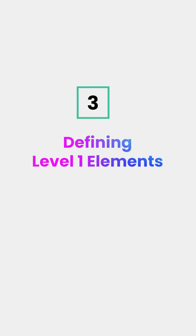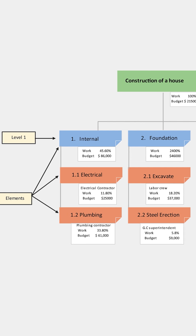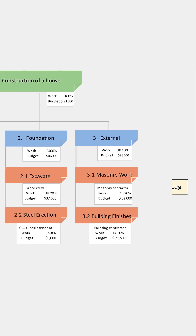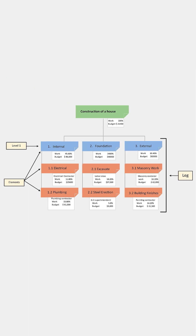Step 3: Defining level 1 elements. These elements are summary deliverable descriptions that capture 100% of the project scope.